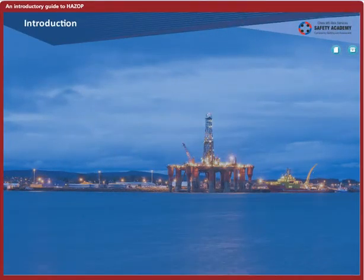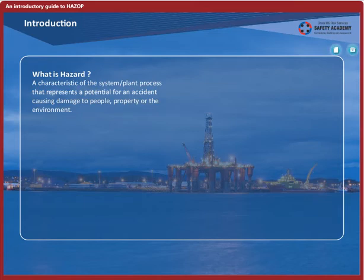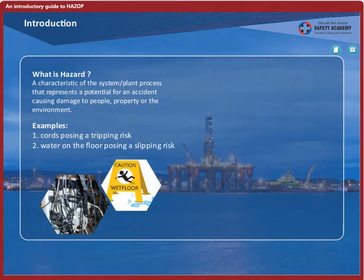Let's get started with some key definitions. What is a hazard? How is it defined? It is a characteristic of the system, plant or process that represents a potential for an accident causing damage to people, property or the environment. Cords posing a risk of tripping or water on the floor posing a slipping risk are good examples.